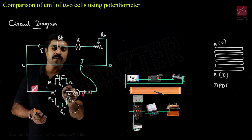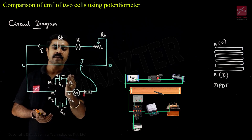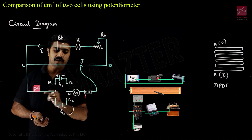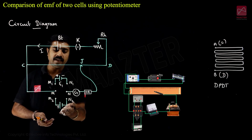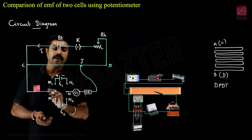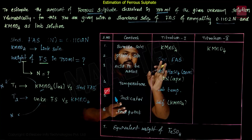The external assessment differs by subject. For Physics, the external assessment breakdown is: formula with explanation 2 marks, table or column with observation 5 marks, short procedure 3 marks, calculation 4 marks, and result with unit 1 mark. Total: 15 marks.